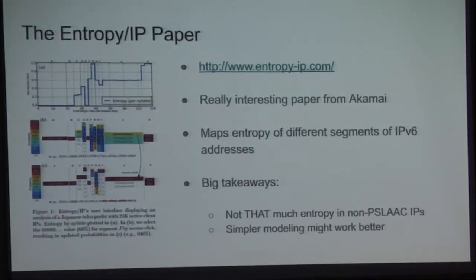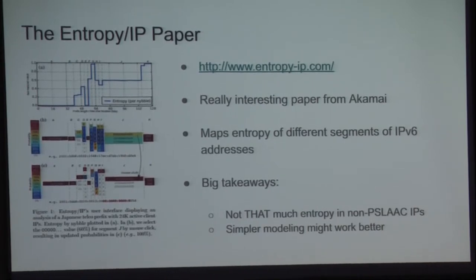Then we found this project where folks associated with Akamai had a massive corpus of data — on the order of billions of IP addresses from a content delivery network — and they analyzed the entropy breakdown of those addresses. It turns out there is a significant amount of structure. This was basically confirmation that even though machine learning didn't work, we appeared to be on the right track. So let's get real dumb about it.